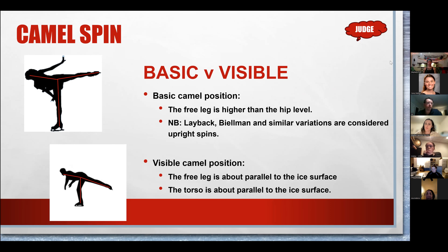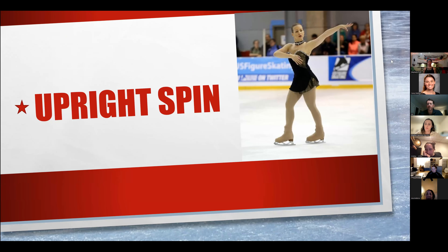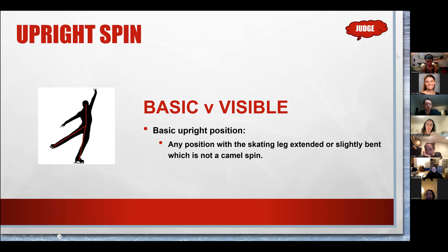The upright position is the basic one where the skating leg is slightly extended or bent, the body is upright, and it's not considered a camel position. You've got a more upright position — hence the upright spin.